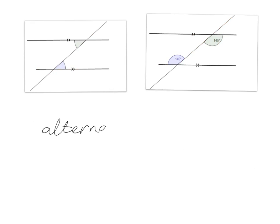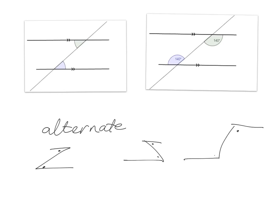The next set of angles we're going to look at on parallel lines are angles we call alternate angles. Although we saw corresponding angles in an F pattern, your alternate angles are going to be tucked into the corner of a Z. Your Z can either be a normal way-around Z, or it can be a back-to-front Z. Your alternate angles are tucked into the corners, and sometimes your Z is kind of spread out, but it's still a Z nonetheless.